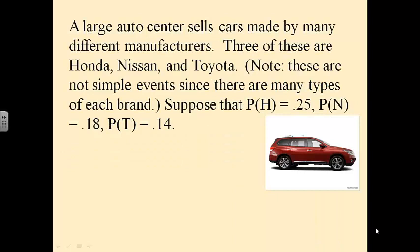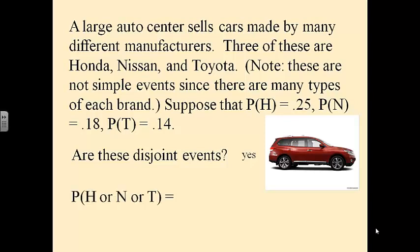A large auto center sells cars made by many different manufacturers. Three of these are Honda, Nissan, and Toyota. These are not simple events, since there are many types of each brand. Suppose the probability of H is 0.25, the probability of N is 0.18, and the probability of T is 0.14. Are these disjoint events? Yes, because you can't buy a car that is both a Honda, a Nissan, and a Toyota — it's either one or the other.